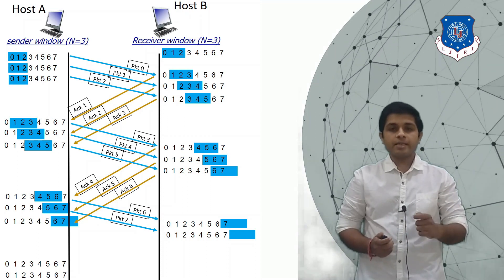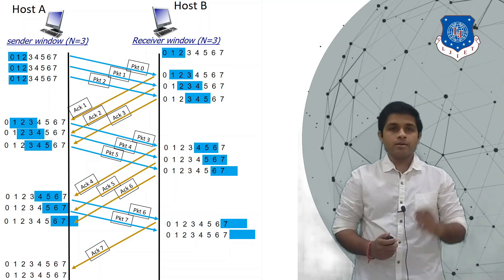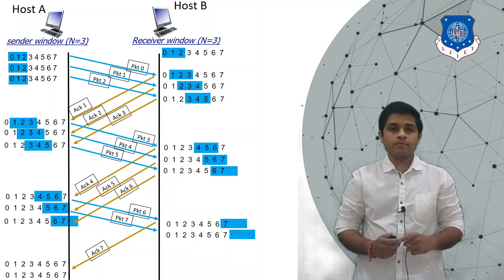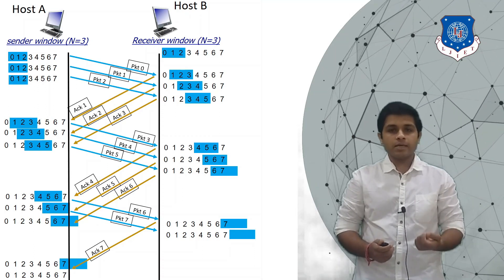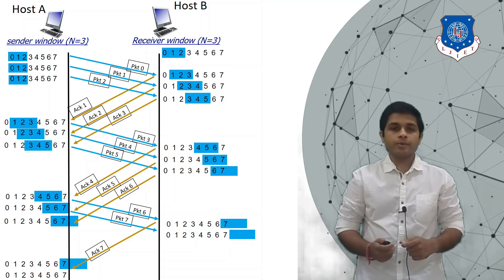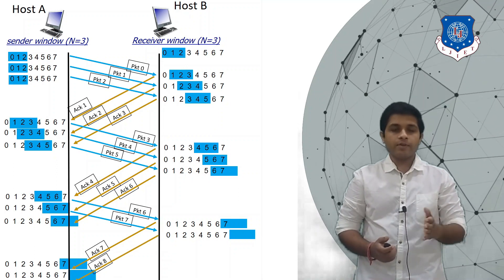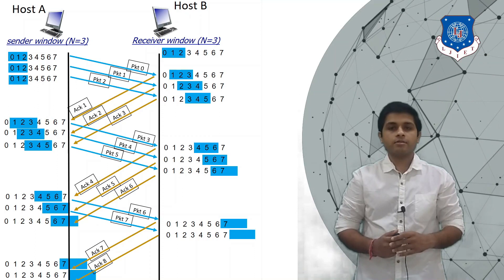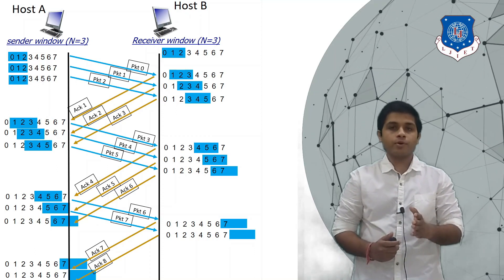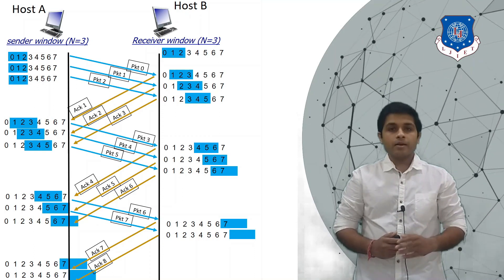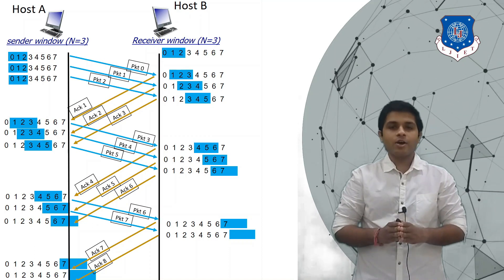After some time B will send acknowledgement ACK 7 for packet 6. As A receives ACK 7, it knows packet 6 is delivered successfully, so the window will slide. After some time B will send acknowledgement ACK 8, and as A receives ACK 8, it finds that all packets are delivered successfully. This is how the Selective Repeat protocol works when there is no data loss or acknowledgement loss.